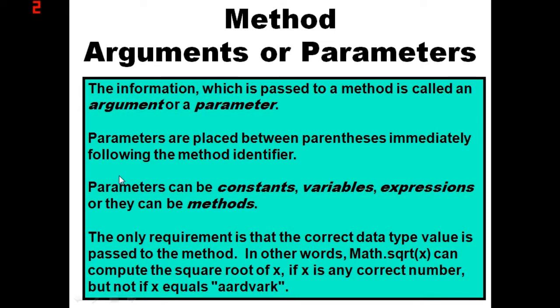Parameters can be constants, variables, expressions or they can be methods. A constant is just a number or data type that isn't stored. If you just type Math.sqrt and put a 6 inside of it then it's going to find the square root of 6 even though you haven't stored 6 in any kind of variable.